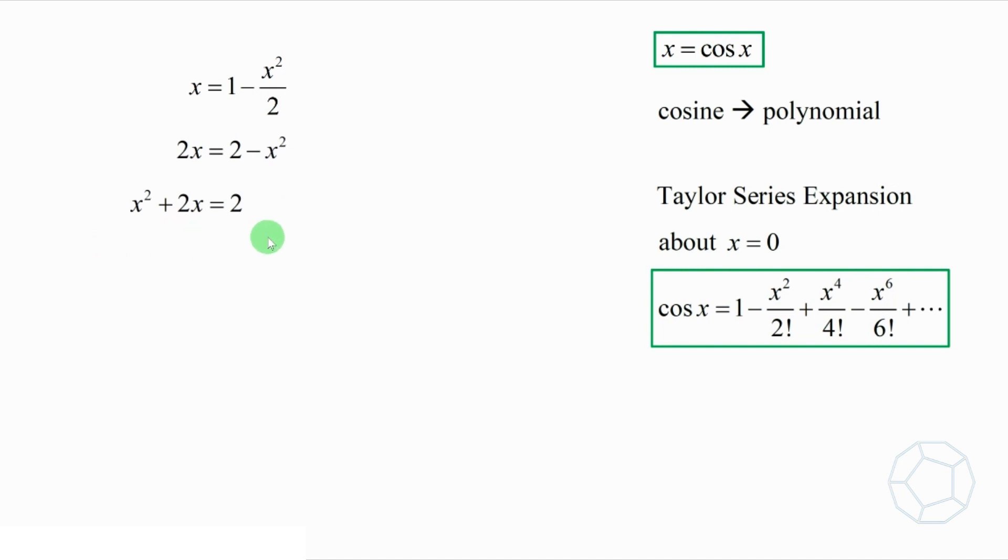This is just a quadratic equation. Although it cannot be factorized, we can solve it by completing the square on the left-hand side. So, we add 1 on both sides of the equation. It becomes x squared plus 2x plus 1 is equal to 3.